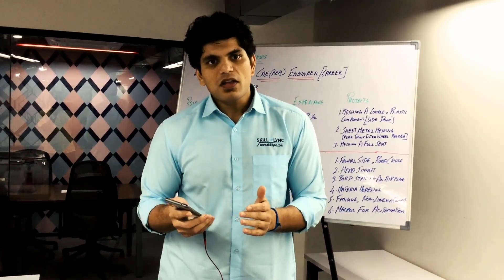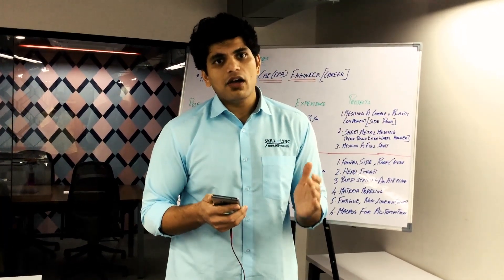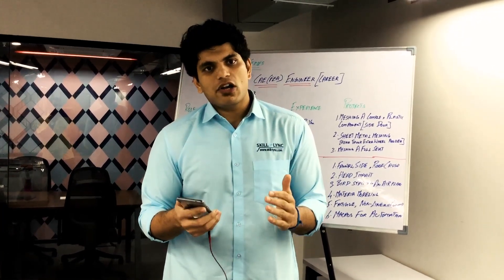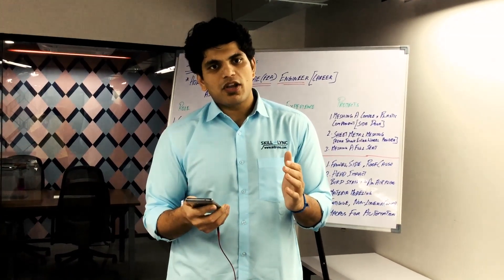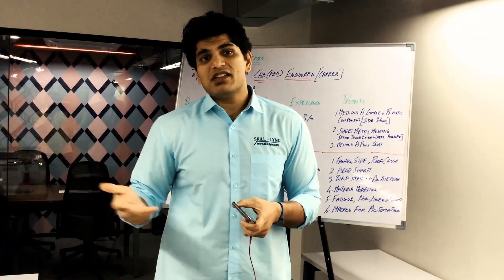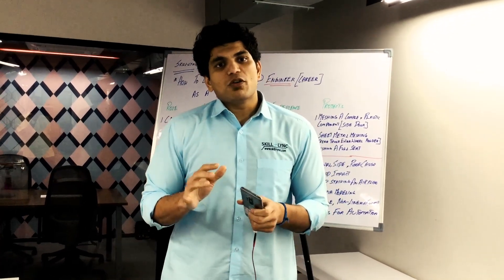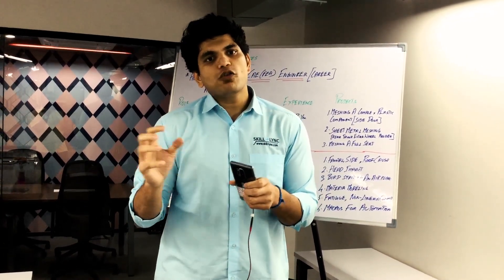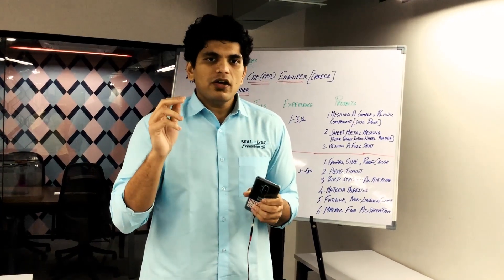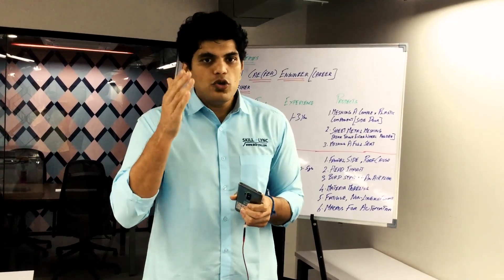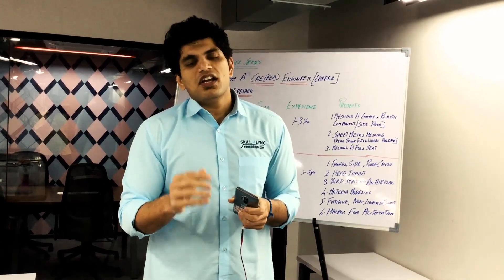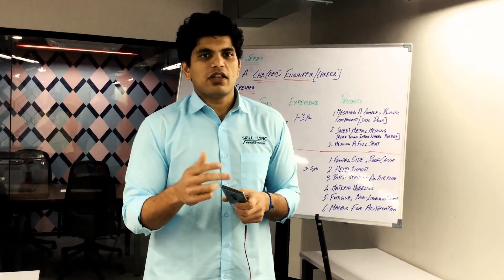This video gives an overview of how to build a career as a CAE engineer. You can start as a modeler, spend about two years in pre-processing, gain exposure to solvers, and then progress to becoming a CAE analyst. Three to four years after that, you can become an engineering manager for the CAE team. Stay tuned for part two, where I'll explain how you can become a CAE engineer in the next six months. If you have any questions, please put them in the comments — we'll try to answer them. Thank you.